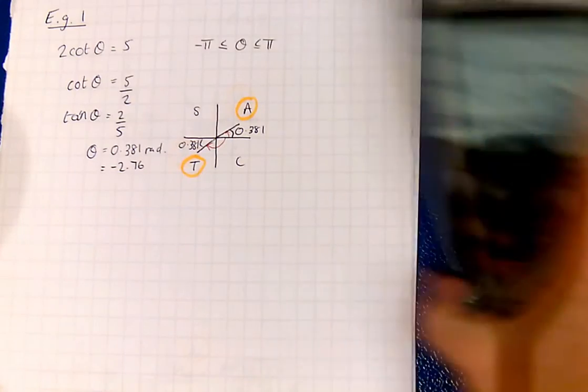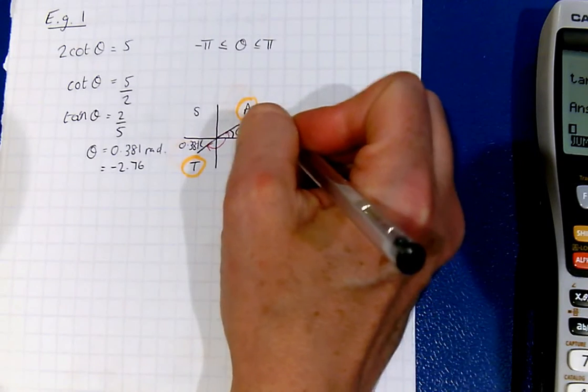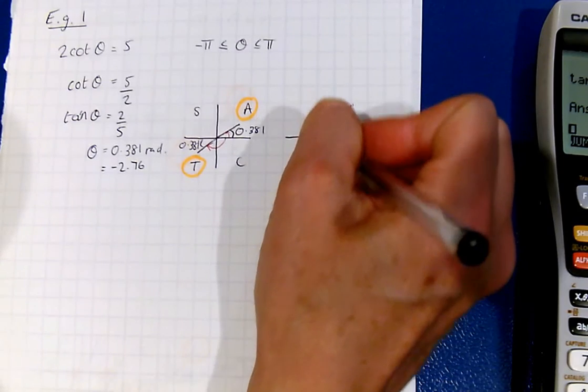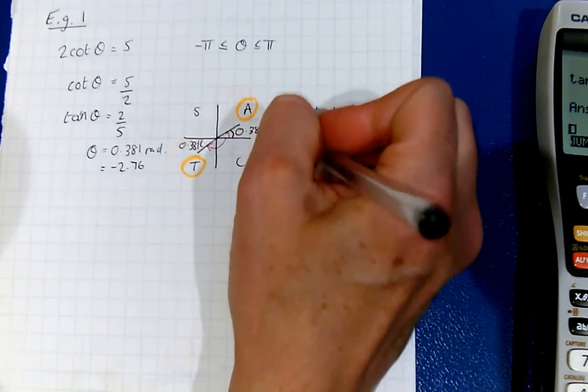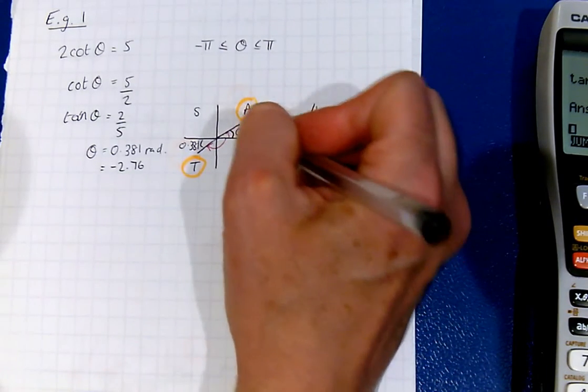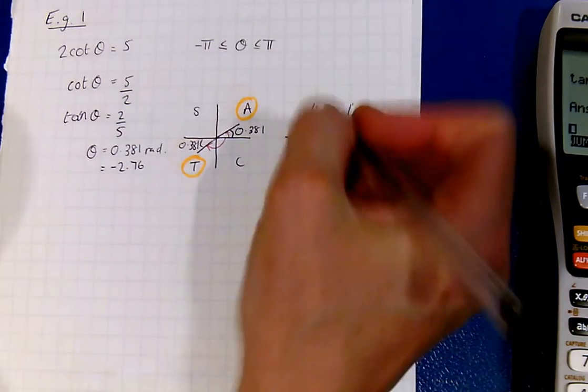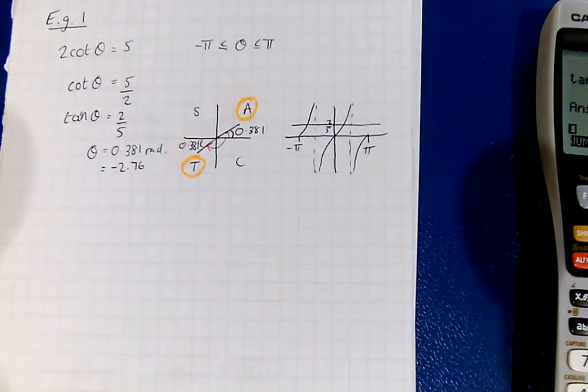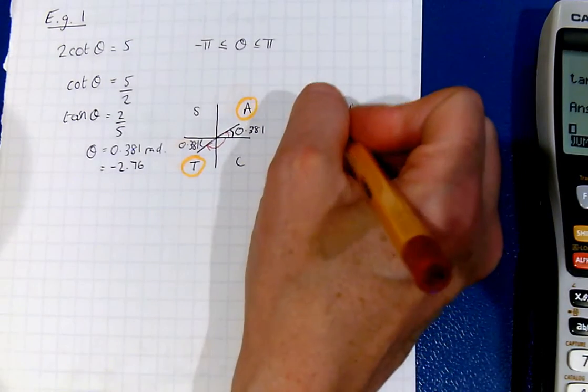You might be a graph person, so I will just draw a little tan graph. Then we need to look at where it intersects 2 fifths, y equals 2 fifths. So I'm just sketching on a 2 fifths. We can see that we're intersecting here and here.